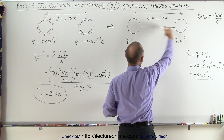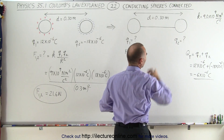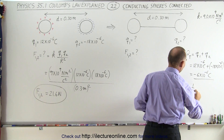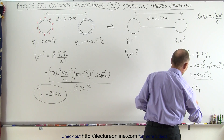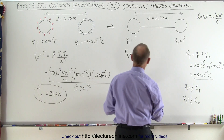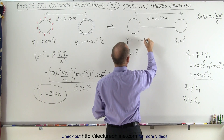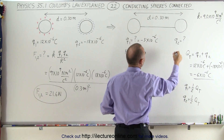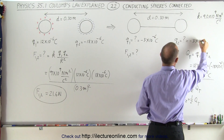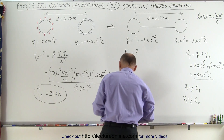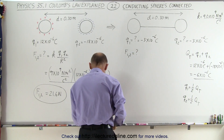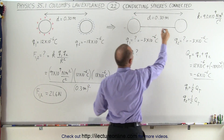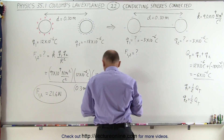The negative charges will run across, and what's left over will distribute itself equally over the two objects. Therefore, Q1 will equal half Q total, and Q2 will also equal half Q total. So each sphere will now have minus 3 times 10 to the minus 6 coulombs. If you graphically represent that, you can see there's just a little bit of negative charge on each sphere.